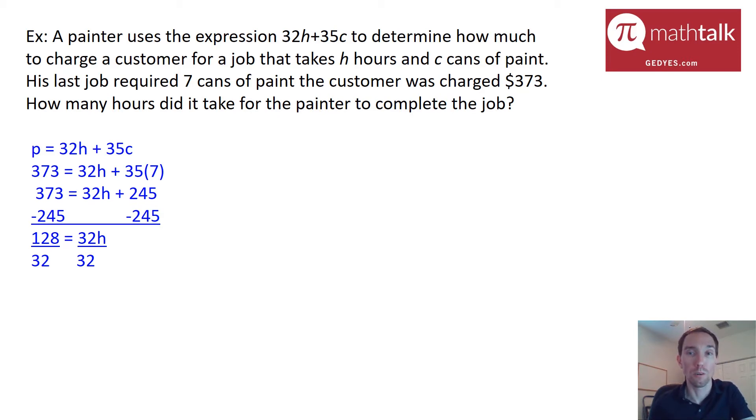I'm going to divide both sides by 32 because that is the number multiplying my variable. And remember with solving equations you always do the opposite step. So when I divide by 32 I'm going to get 4 on the left and H all by itself on the right which means that this job took 4 hours to complete.